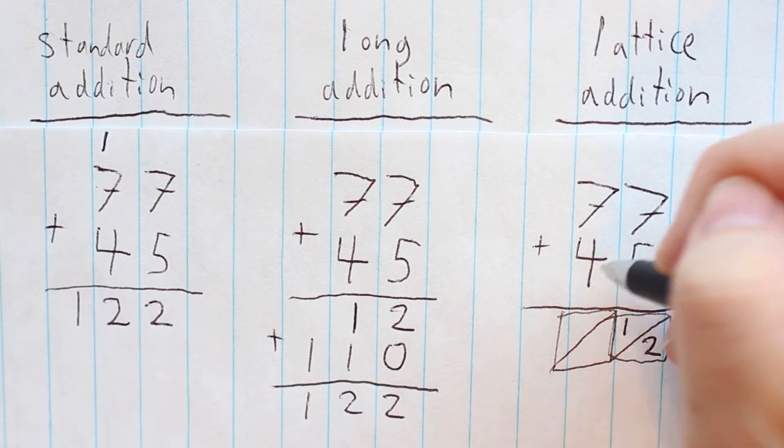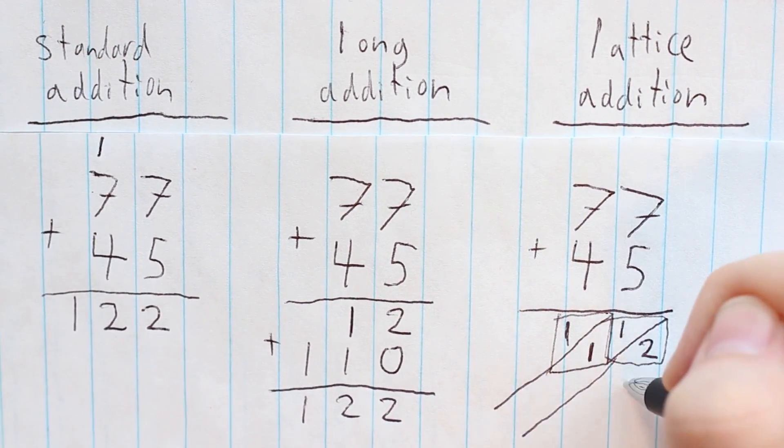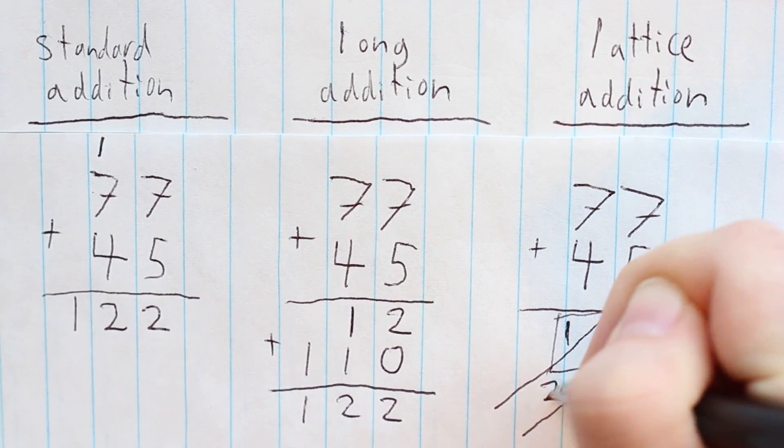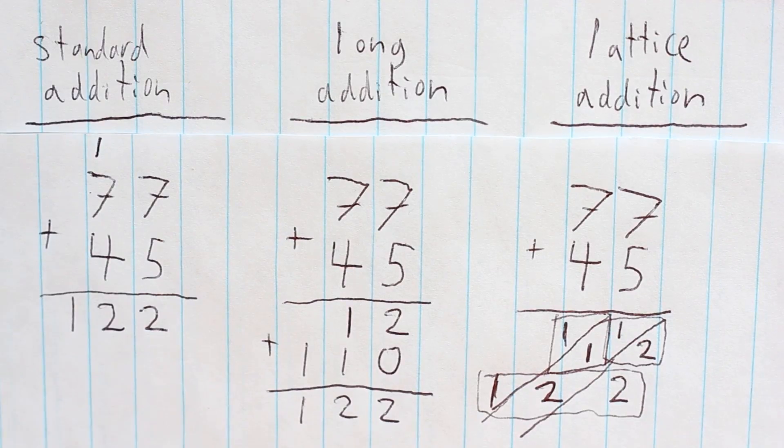In lattice addition, you add 7 plus 4, write the 11 in the box, and then add along the diagonals to get 122. It looks fancy, but it's really just a different way of writing 110 plus 12.